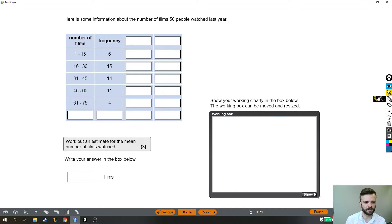Alright, so this question is a bit of a beast. I suspect this is going to end up being quite a long video, but let's give it a read-through and see what we need to do. Here is some information about the number of films 50 people watched last year. And then we have this table, which means that there were 6 people who watched between 1 and 15 films, there were 15 people who watched between 16 and 30 films, etc.